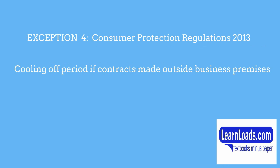Exception number four: consumer contracts and cooling-off periods. The Consumer Protection Regulations 2013 apply to consumer contracts made over the telephone, internet, post, or through a catalogue instead of at the business premises of the trader. Where these regulations apply, consumers have a cooling-off period after acceptance when they can change their mind and withdraw from the contract. Note that some consumer contracts are excluded — contracts relating to financial services, sale of land, and contracts for transport do not have an automatic cooling-off period under these regulations.